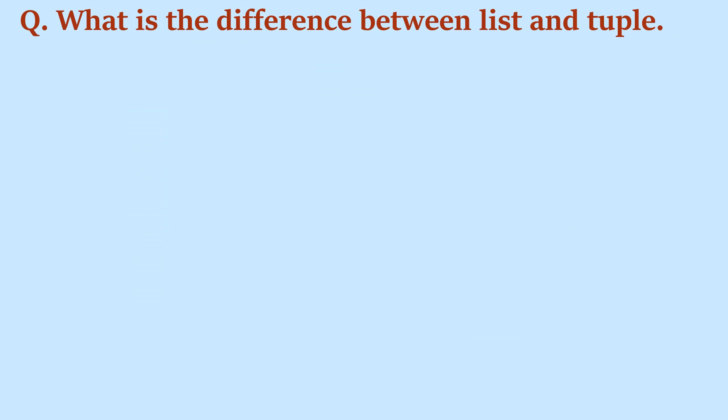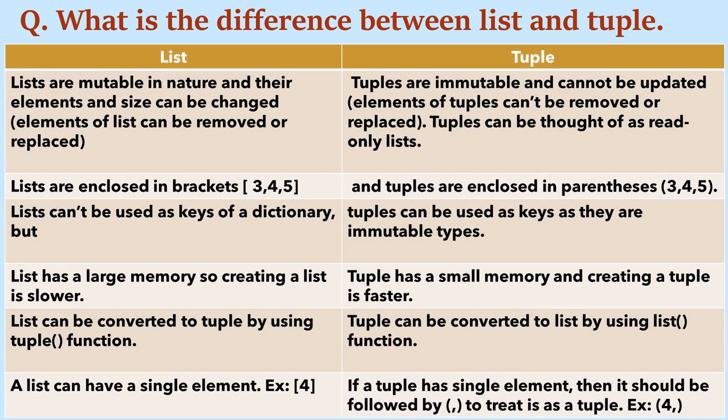What is the difference between list and tuple? First, list is mutable and tuple is immutable — we can change the size of a list, update it, remove or add elements. But tuples are immutable, so we cannot update, replace, or remove any element; they are read-only data objects. Lists are enclosed in square brackets and tuples are enclosed in parentheses. Also, lists cannot be used as keys in a dictionary, whereas tuples can, because they are immutable.